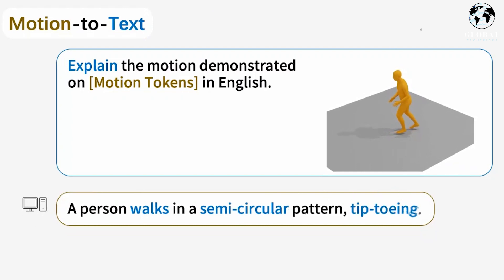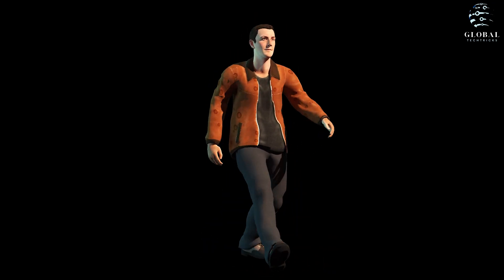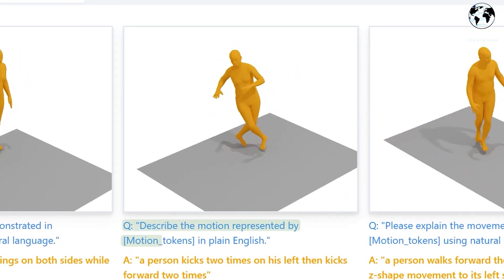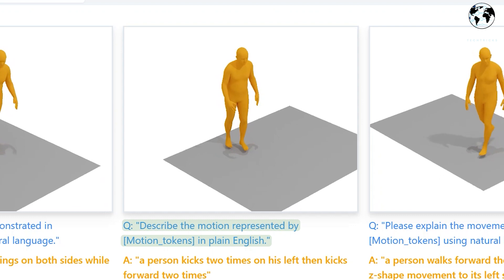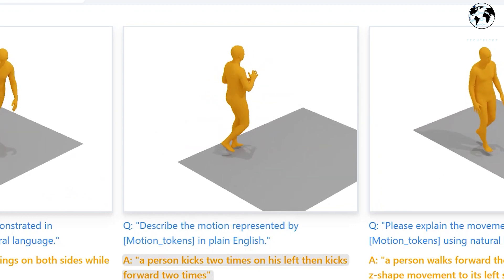explain motion demonstrated on motion tokens in English, such as, A person walks in a semi-circular pattern and tiptoes, Motion GPT generates a corresponding textual description. Look at this. Describe the motion represented by in plain English. And it provides an answer. A person kicks two times on his left, then kicks forward two times.